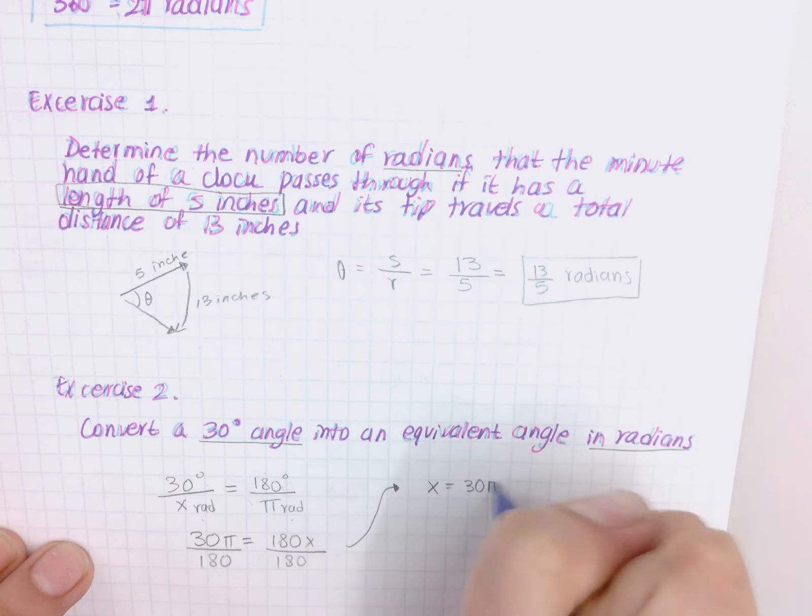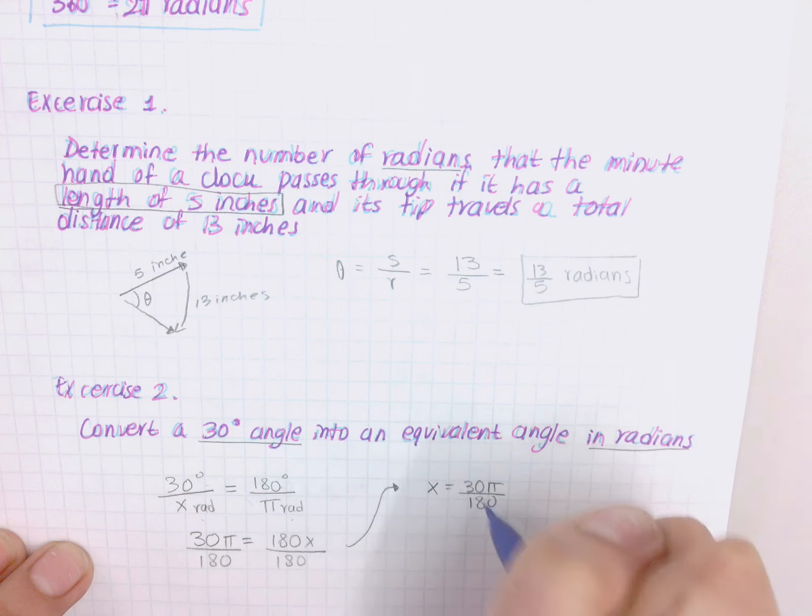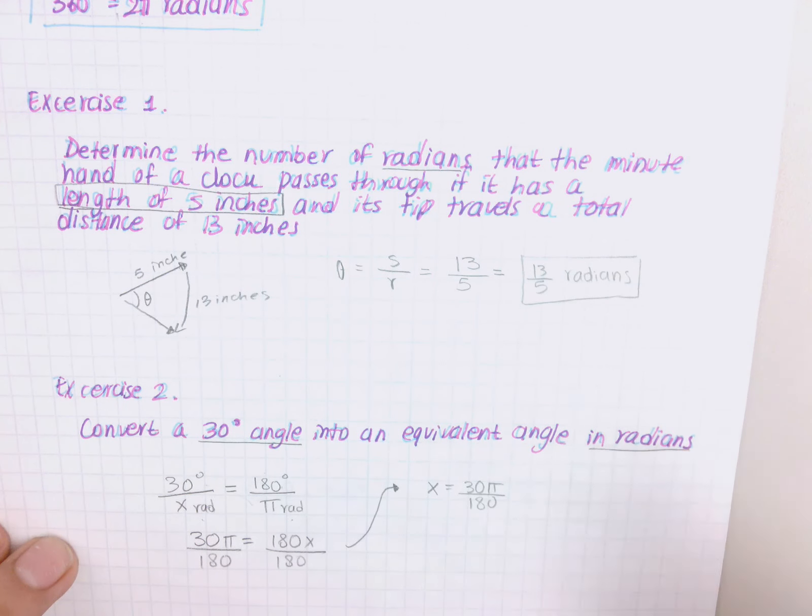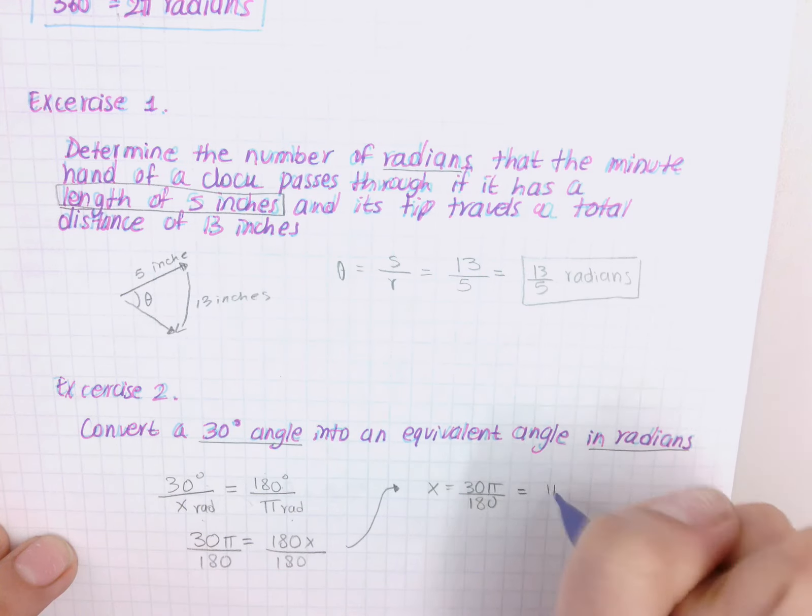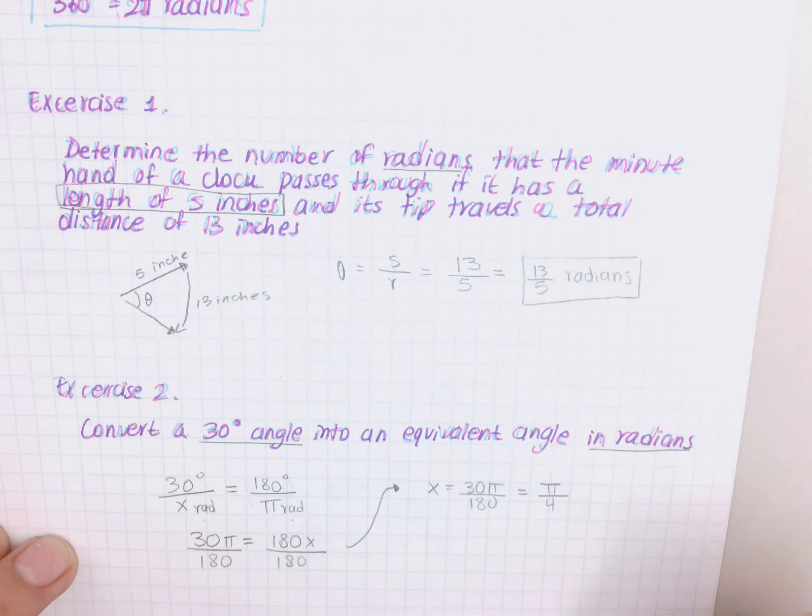And we can simplify 30 and 180, leaving you with π over 4. Yes, because they're both divisible by 10 and then they both go into 3.